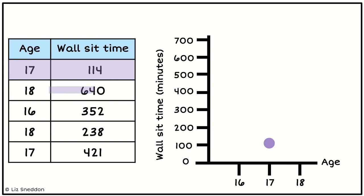Now let's add the next one. Our next coordinate point is age 18 and 640 minutes. Oh it should be seconds actually not minutes. So that's going to give us 18 and 640. Put a point where they meet and there's my coordinate.